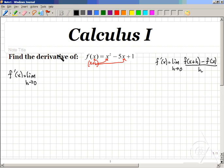That means that this will look like parenthesis x plus h parenthesis squared minus 5 times parenthesis x plus h and then plus 1.